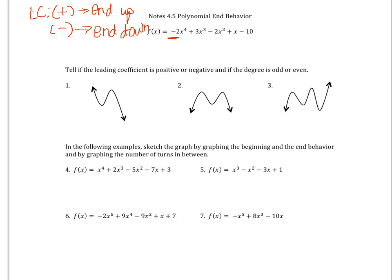The next thing we want to look at is the degree — the degree is the highest exponent. In this example we can see that it is 4. You need to know whether the degree is even or odd. If it is an even degree, then the arrows at the beginning and end of the graph are going in the same direction. If the degree is odd, then the arrows are going in opposite directions. I remember it as: odd, opp — odd means opposite.